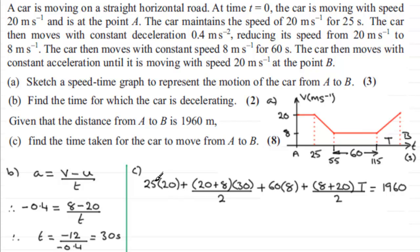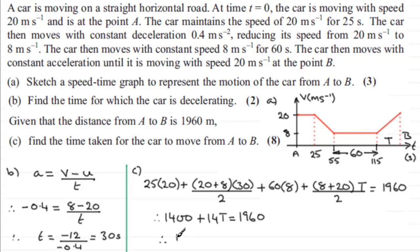Simplifying the first three terms gives 1400. The final term simplifies to 14T. So we have 1400 plus 14T equals 1960. Subtracting 1400 gives 560, and dividing by 14 gives T equals 560 divided by 14, which equals 40 seconds.